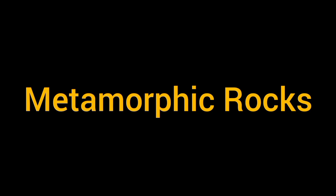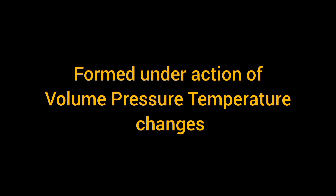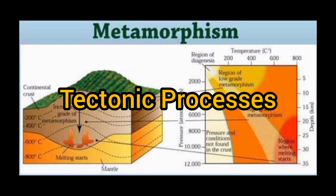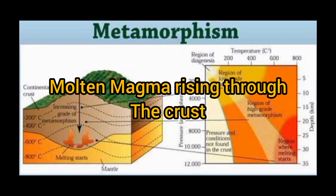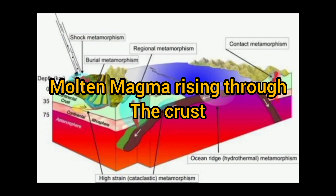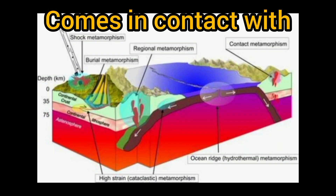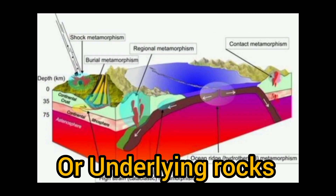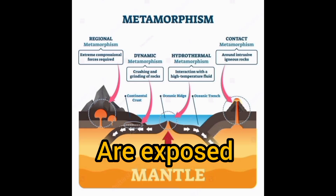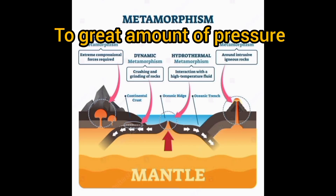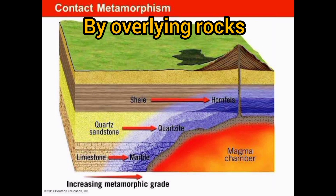Metamorphic rocks — these rocks form under the action of volume, pressure, and temperature changes. Metamorphism happens when rocks are forced down to lower levels by tectonic processes, or when molten magma rising through the crust comes in contact with the crustal rocks, or underlying rocks are exposed to great amounts of pressure by overlying rocks.